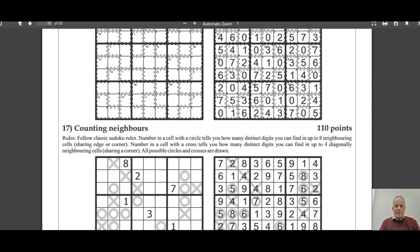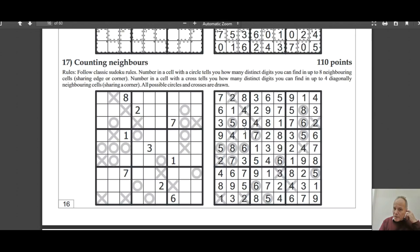Another strange one - Counting Neighbors. A number in a cell with a circle tells you how many distinct digits you can find in the cells around it. And a number in a cell with a cross tells you how many are in the diagonal surrounds. So if there's a cross on the edge of the grid and it's not in the corner, I think it must be a two. That must be a two, that must be a two, that must be a two, and that must be a one. Because for instance on this one here, it's pointing to that cell and that cell and saying how many of those are different or distinct digits. And they must be distinct because they're in the same row. So that seems to be a start for that puzzle at least.